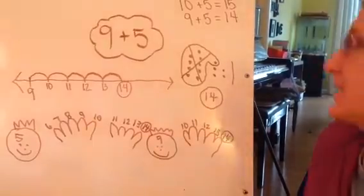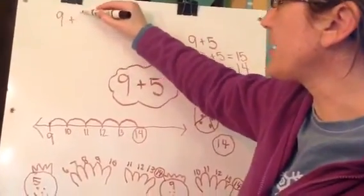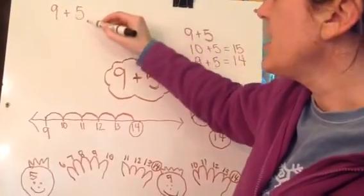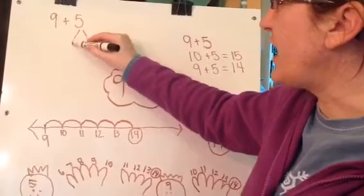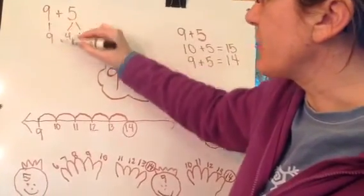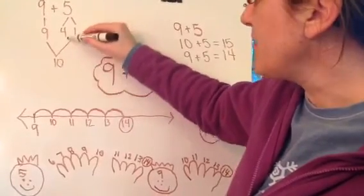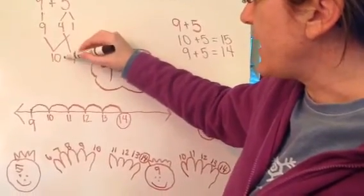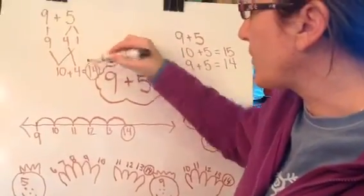Or I could do the take apart, put back together strategy. I don't really know what 9 plus 5 is. But I know what 9 plus 1 is. So I'm going to break the 5 into a 4 and a 1. And I'm going to bring the 9 down. And then I'm going to put the 9 and the 1 together and get 10. And then I'm going to bring the 4 down and add the 4. And that gives me 14.